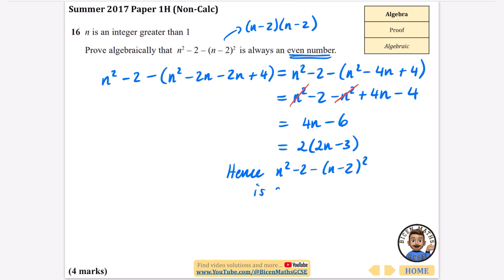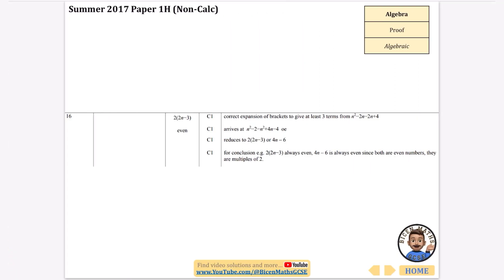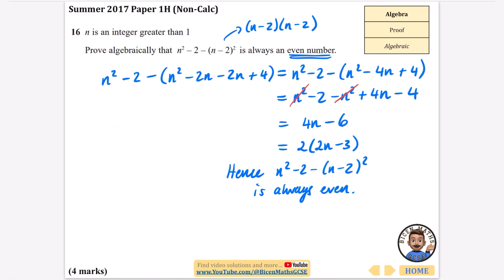Hence n squared minus 2 minus (n minus 2) squared is always even because it is being multiplied by 2. The mark scheme confirms we should arrive at the two brackets 2(2n minus 3), and note that it's always even as a multiple of 2 — we should include that communication mark at the end.